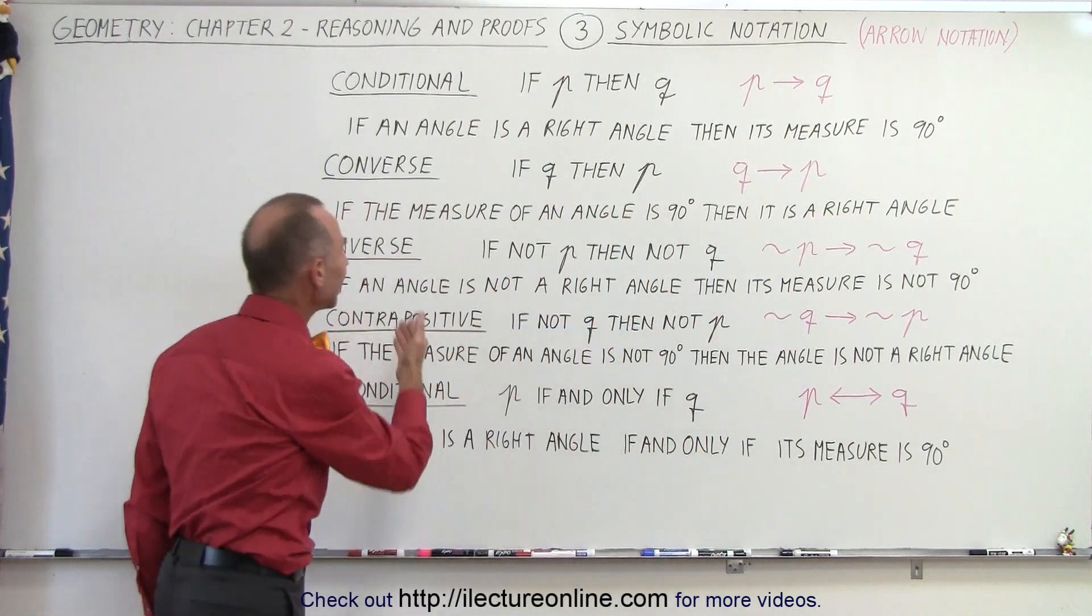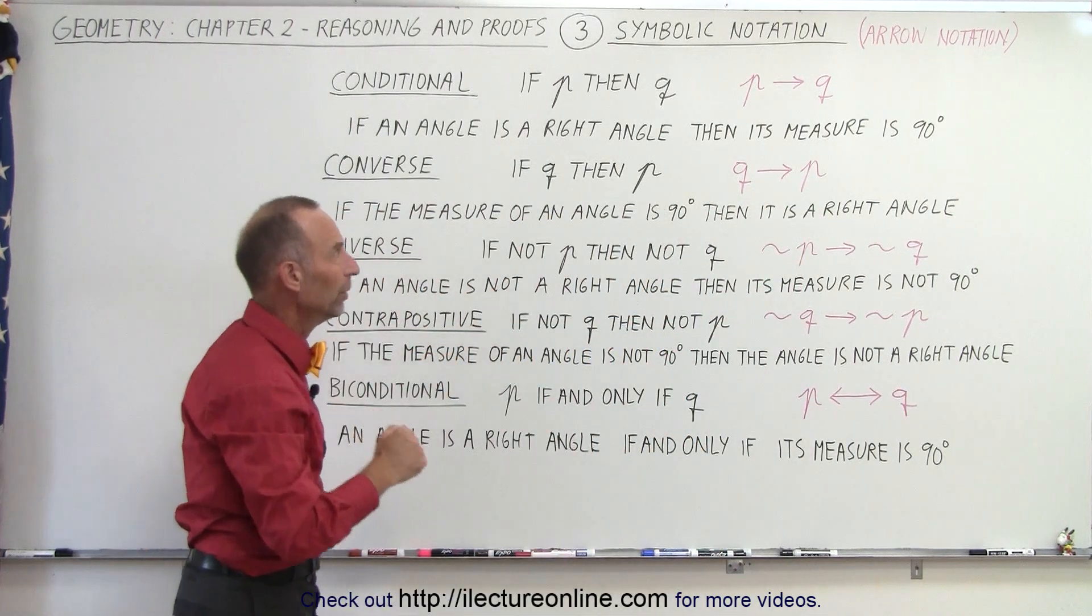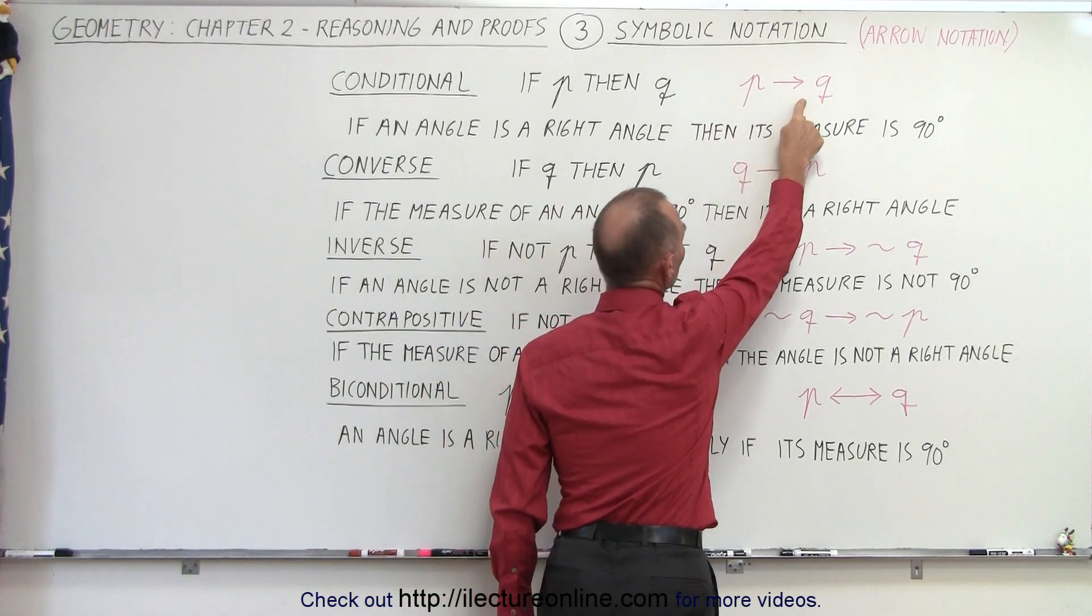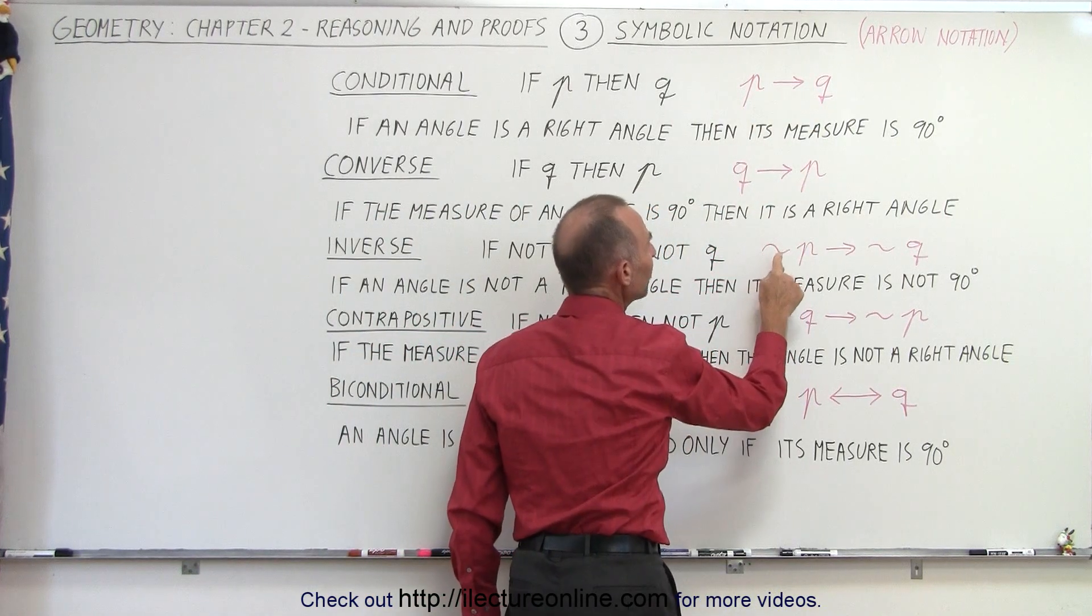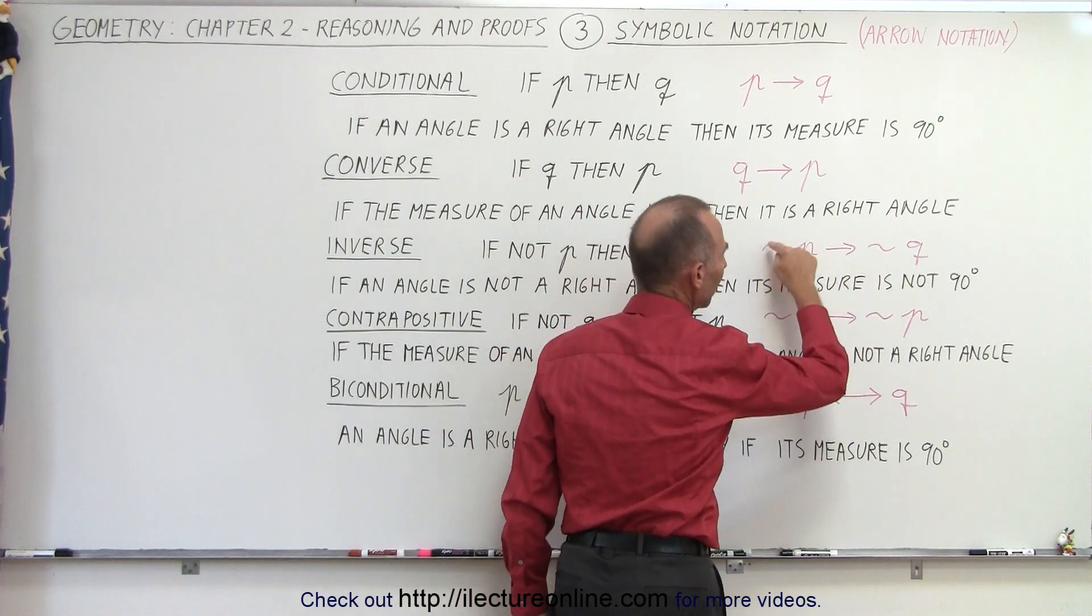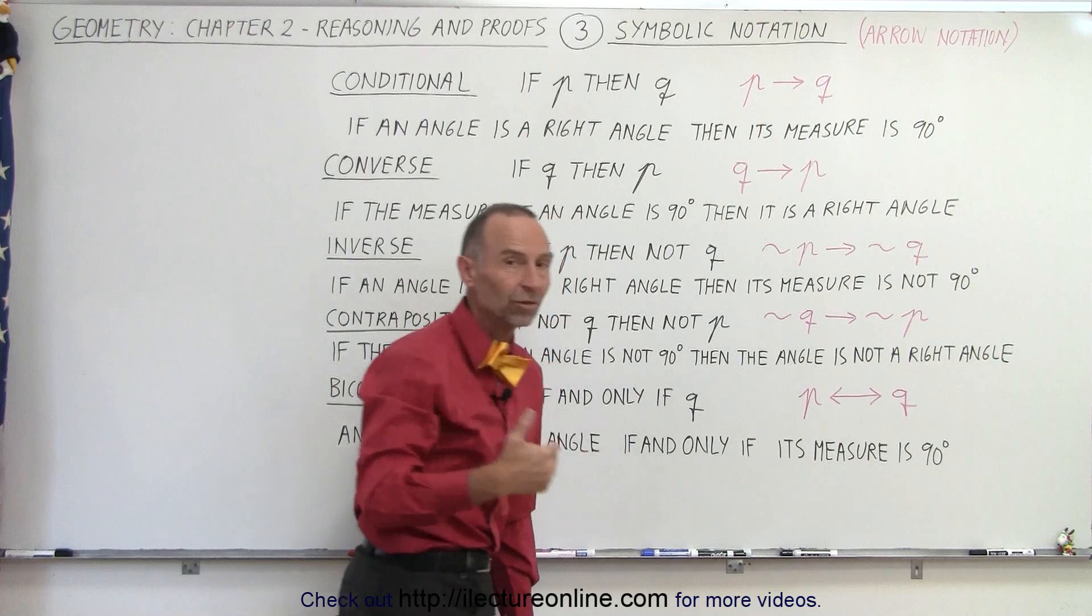And then we have what we call the inverse statement where instead of using the true value if P is true then Q is true, here we say if P is not true then Q is not true. And that's what the little squiggly line means, that means not.